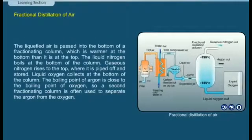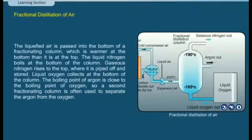The liquefied air is passed into the bottom of a fractionating column, which is warmer at the bottom than at the top. The liquid nitrogen boils at the bottom of the column. Gaseous nitrogen rises to the top, where it is piped off and stored.